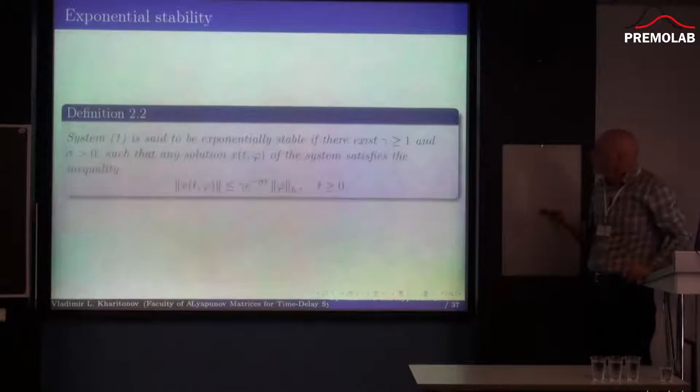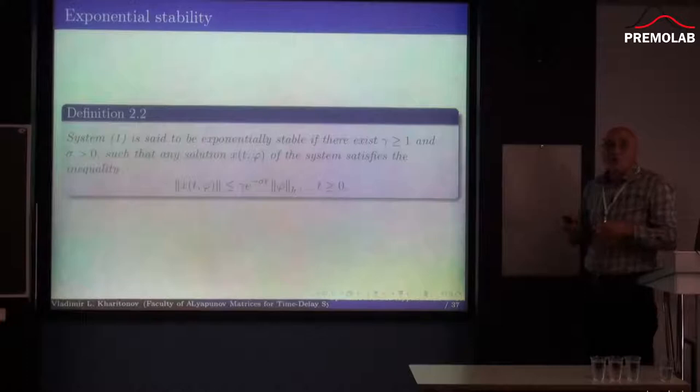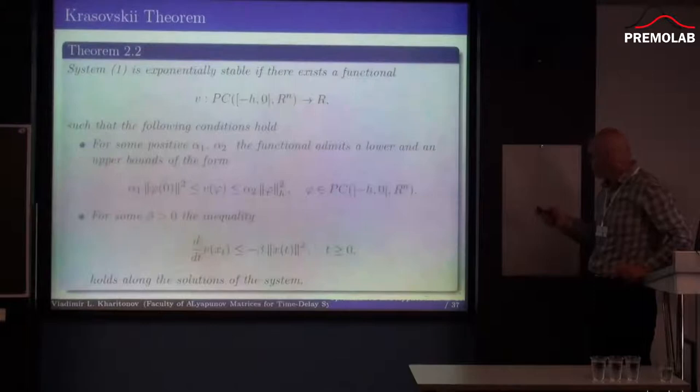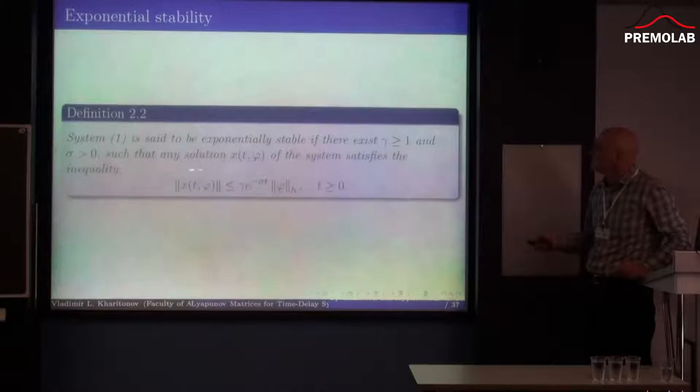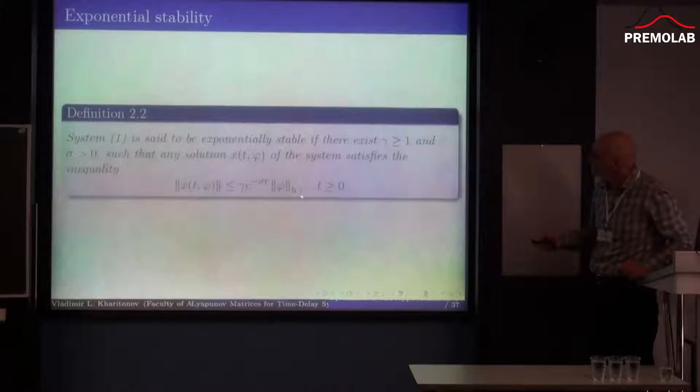This is the classical definition of exponential stability for system one. As usual, we have a constant gamma greater than or equal to one, and a positive sigma, such that for any solution of the system we have an exponential upper bound. The new element here is that we use the norm of the initial function with index H.